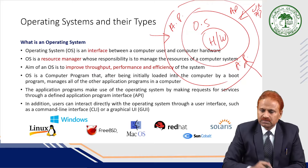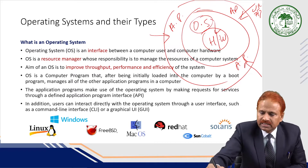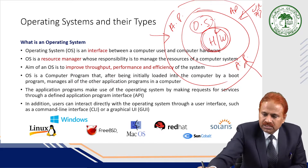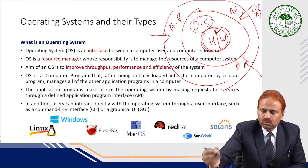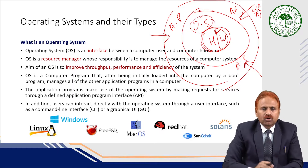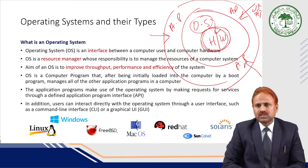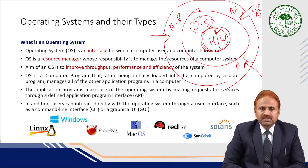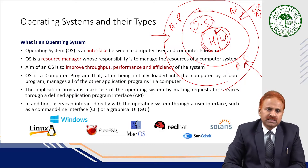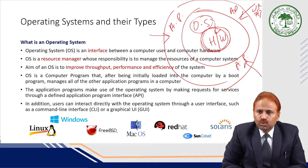The operating system is a resource manager whose responsibility is to manage the resources of the computer system. You can see that it is the operating system which directly interacts with the hardware. It manages various resources on the instruction of the user, which is passed to the operating system through various application programs. The aim of an operating system is to improve throughput, performance, and efficiency of the system.